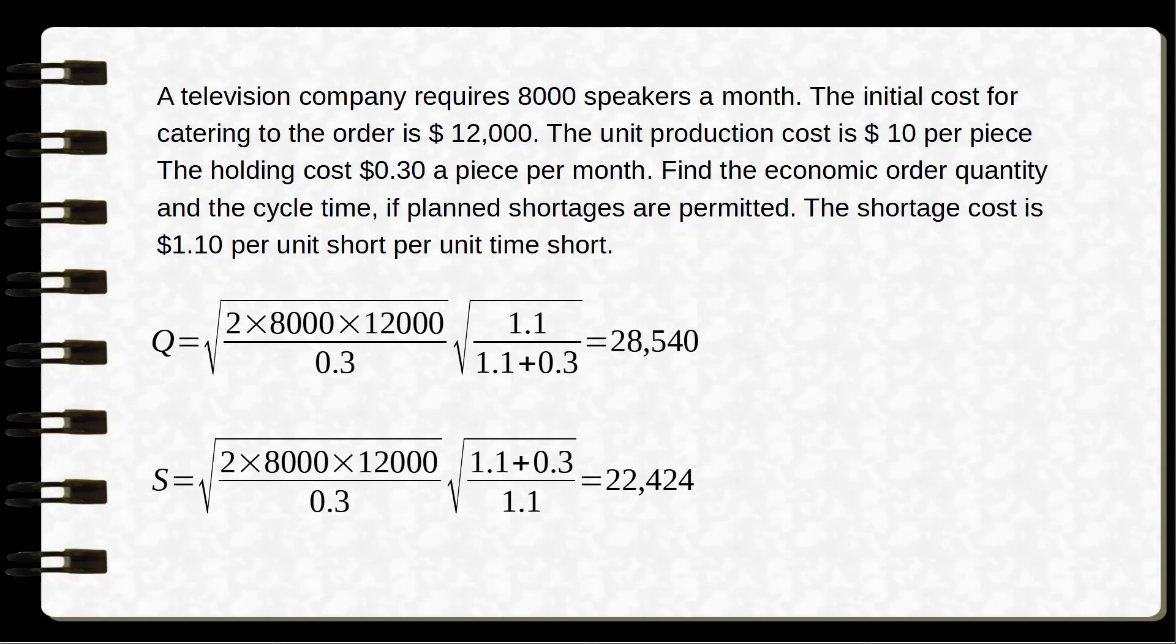So the economic order quantity is going to be 28,540. Now what is S? Once the economic order Q is received, immediately after it is received, the backlogs are cleared. The backlog is going to be Q minus S. So what is S? S is 22,424.